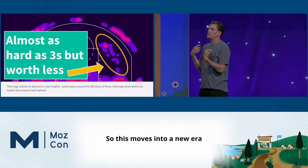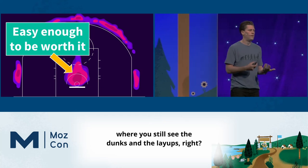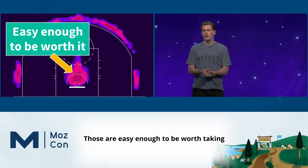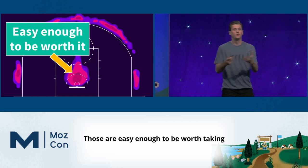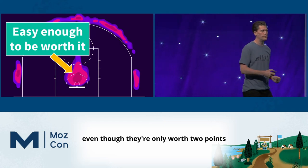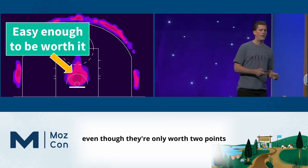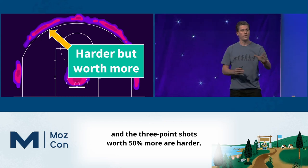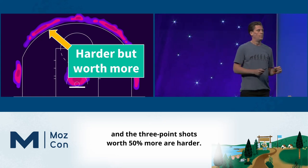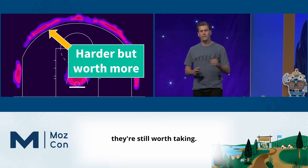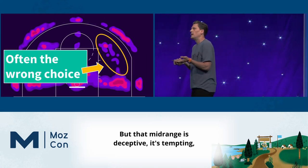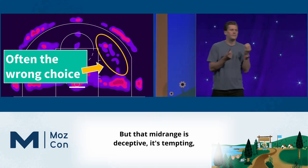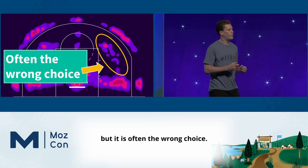This moves into a new era where you still see the dunks and layups — those are easy enough to be worth taking, even though they're only worth two points. The three-point shots, worth 50% more, are harder, but because they're worth so much more, they're still worth taking. But that mid-range is deceptive — it's tempting, but it is often the wrong choice.